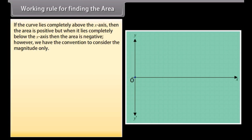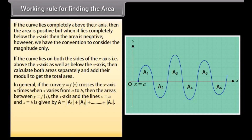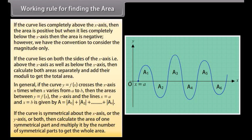If the curve lies completely above the x-axis, then the area is positive, but when it lies completely below the x-axis, then the area is negative. However, we have the convention to consider the magnitude only. If the curve lies on both sides of the x-axis, calculate both areas separately and add their moduli to get the total area. In general, if the curve y = f(x) crosses the x-axis n times when x varies from a to b, then the area is A = |A1| + |A2| + ... + |An|. If the curve is symmetrical about the x-axis, y-axis, or both, calculate the area of one symmetrical part and multiply by the number of symmetrical parts to get the whole area.